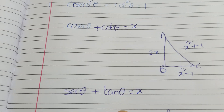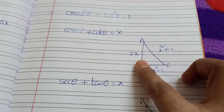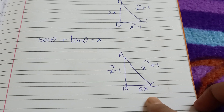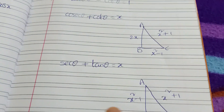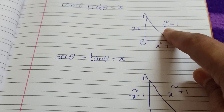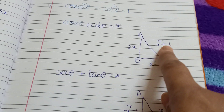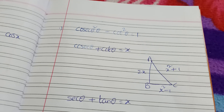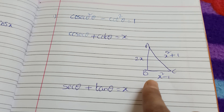In this formula, sec θ + tan θ = x. The opposite side is 2x. The adjacent side is x² minus 1. In the secondary unit, 2x is the opposite side and x² minus 1 is another side. If we have a Pythagorean triple like 3, 4, 5, we can find the same number using x² minus 1.